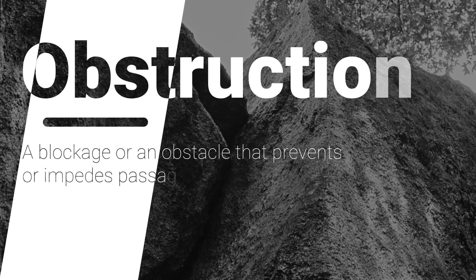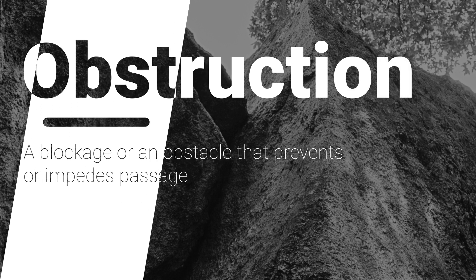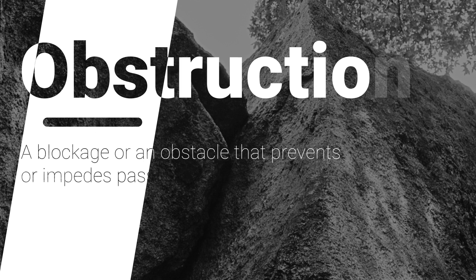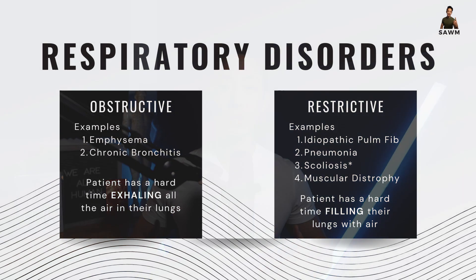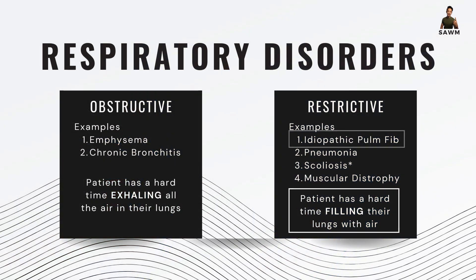Obstructive is related to the word obstruction — a blockage, an obstacle, something that prevents or impedes passage through. With this type of patient, they're going to have a hard time exhaling all of the air in their lungs. On the other hand, with restrictive lung diseases, these patients have a hard time filling their lungs with air. The most common restrictive lung disease is idiopathic pulmonary fibrosis, which causes a scarring of the lungs. That's what fibrosis means — a thickening or scarring of tissue.